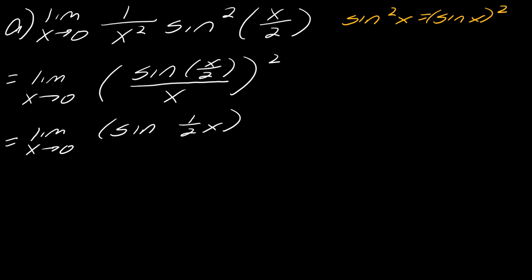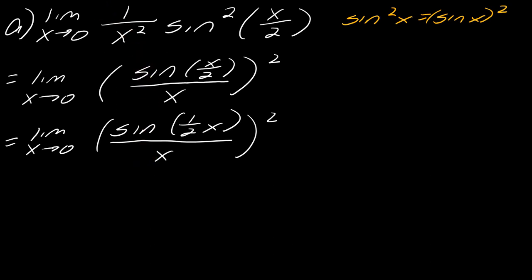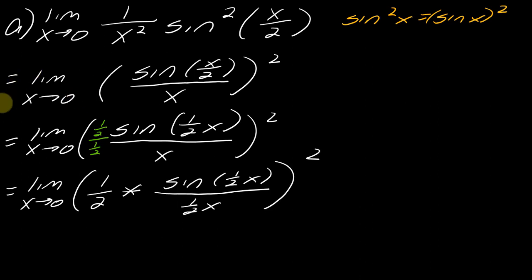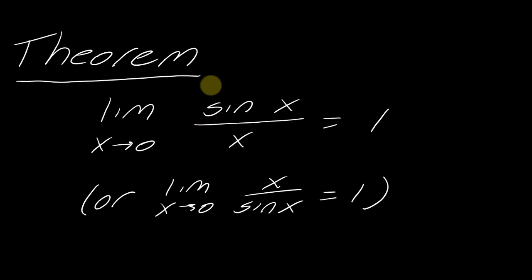And then all of this is over x. What I really need here is for this to also say one half. So I'm going to multiply one half by the top and the bottom. That will help me work out the rest of the problem. So I've got the limit as x approaches zero, and I break out that one half, then sine of one half x over that other one half I multiplied on the bottom — and remember, all of this is being squared. According to the theorem, as long as I have the same thing in the numerator and denominator, I can invoke it. I've got one half x here and one half x there.